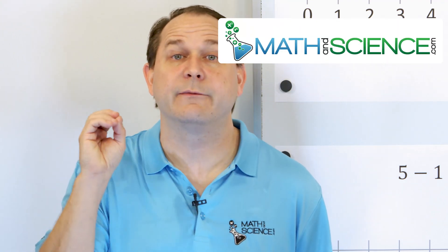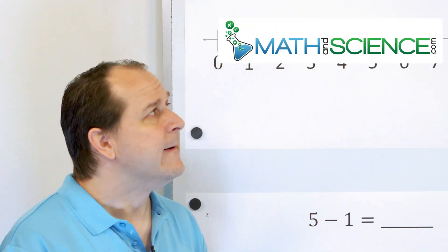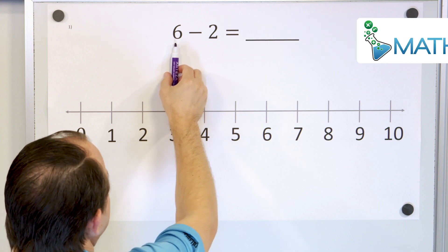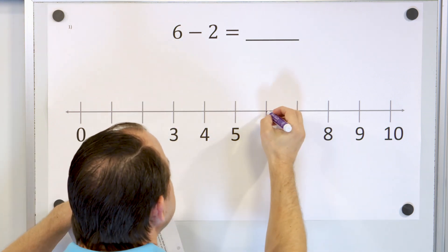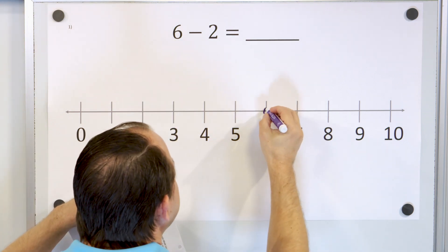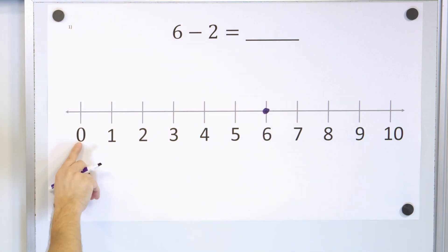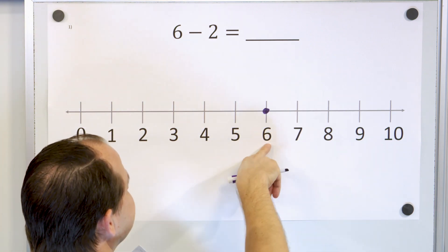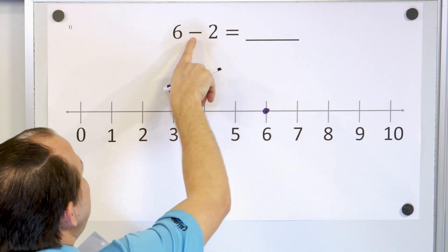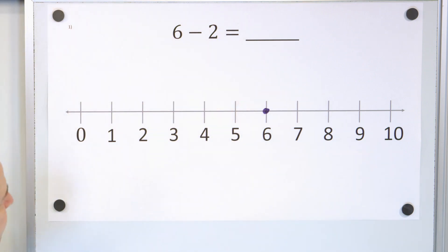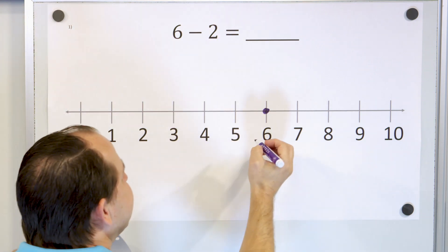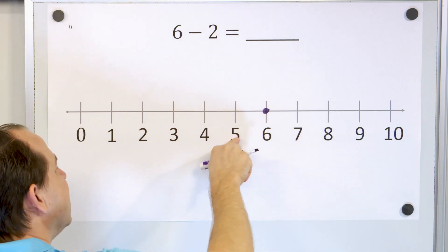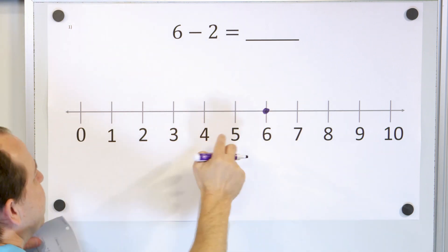I want you to think about what it is to subtract something. What it means is I have six elephants, and I'm going to put a starting point here with six elephants. One, two, three, four, five, six. I start with six. And when I subtract two elephants, it means I start with six and I go down. Subtraction means going to the left by two units.